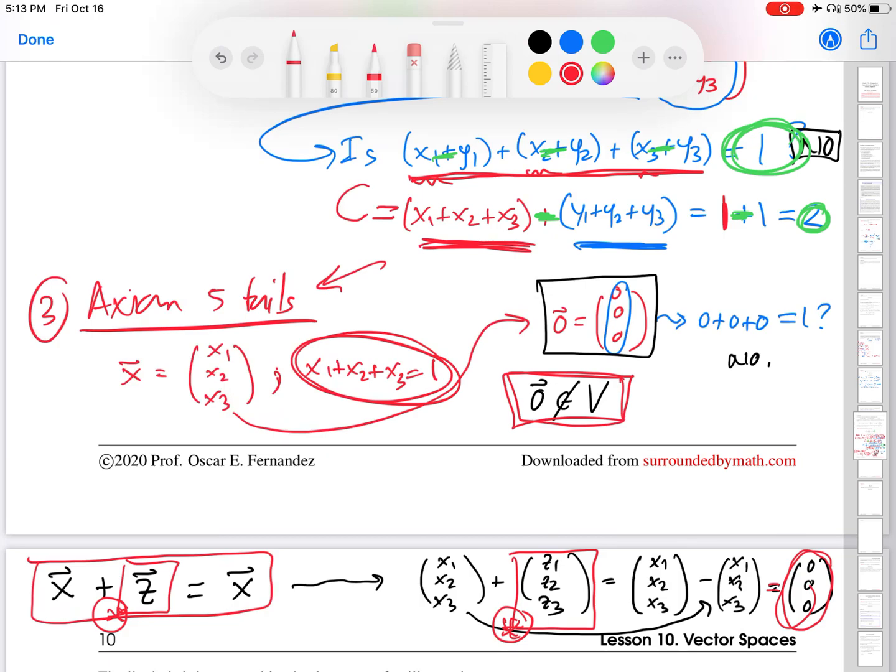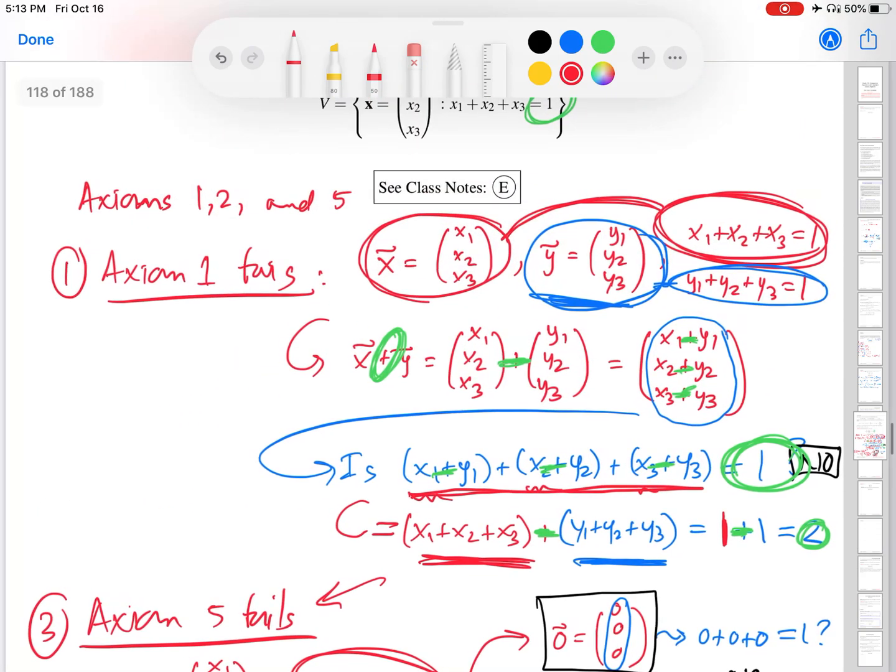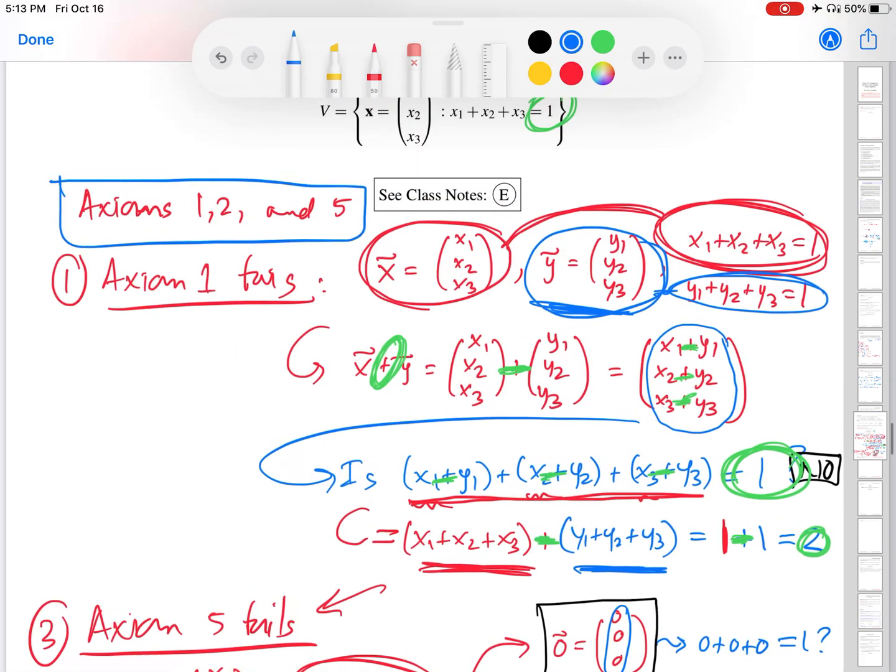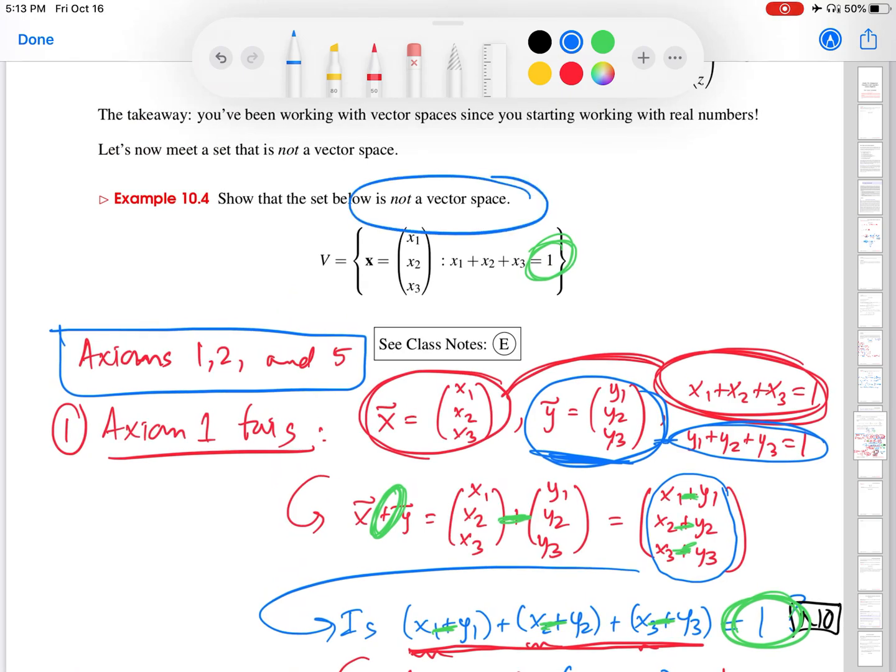So again, you could keep going through and checking axioms that fail. It might be a good idea to try one on your own, just to make sure you can do this on your own. But axioms one, two, and five, as I mentioned earlier, are go-to axioms when you want to show that a space is not a vector space. Very often, one or more of these axioms will fail in those settings.